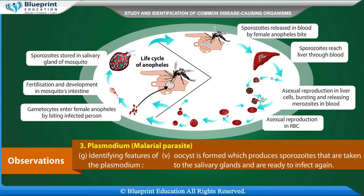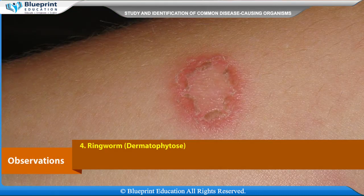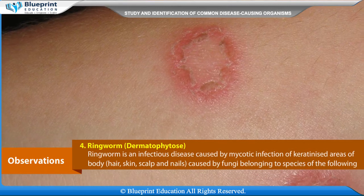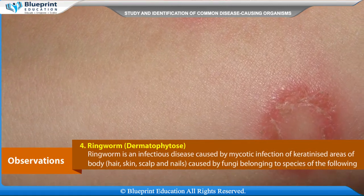The gametocytes are taken up by the female Anopheles mosquito, where fertilization takes place and an oocyst is formed. The oocyst produces sporozoites that are transported to the salivary glands, ready to infect again.